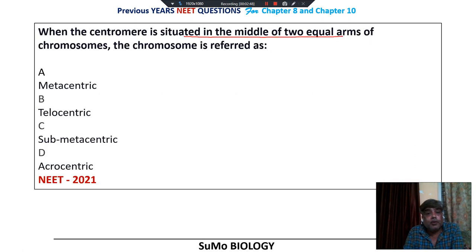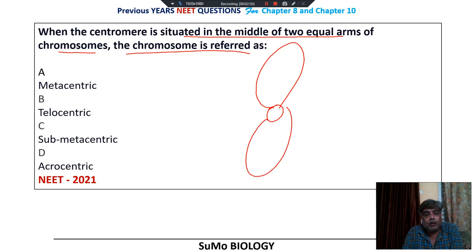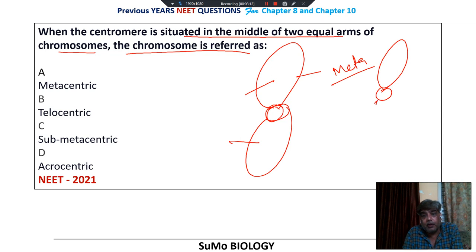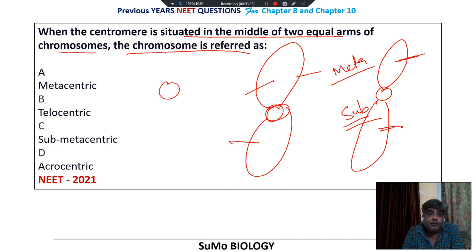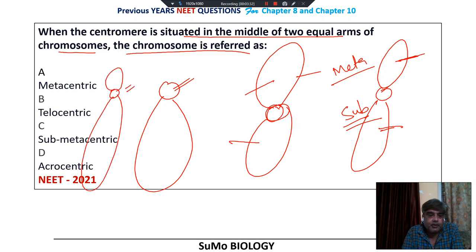When the centromere is situated in the middle of 2 equal arms of a chromosome, the chromosome is referred to as metacentric. According to the position of the centromere, chromosomes are classified into 4 categories. When centromere is in the middle it produces 2 equal arms — metacentric. When situated slightly away, it produces 1 short and 1 longer arm. When at one end, it is telocentric or acrocentric. So option number A is the right choice.